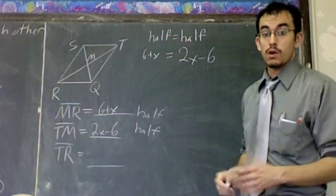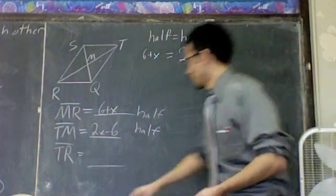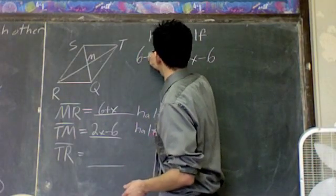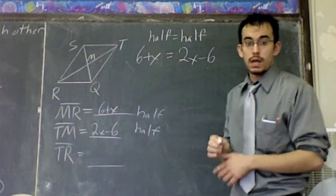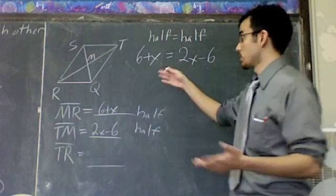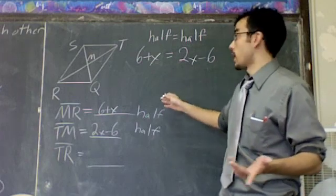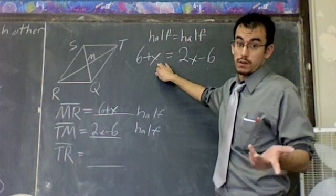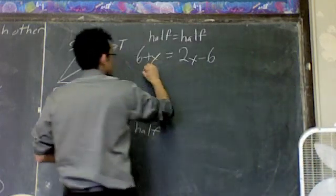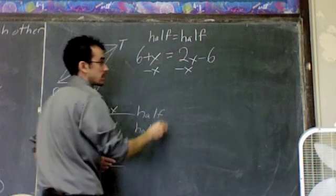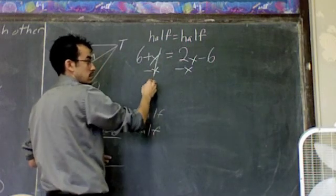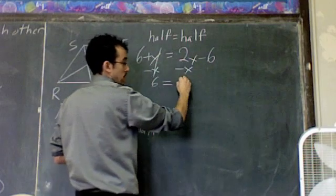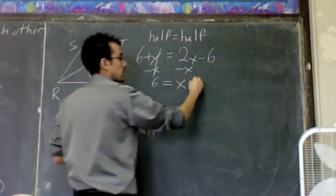We're going to solve this equation. We want X. We want X's alone. While I've got X on both sides, I couldn't combine any like terms. So get rid of the smaller X. This is 1X. This is 2X. I'm going to get rid of this one. Since it's positive 1X, you have to subtract 1X. Subtract X from the left, subtract X from the right. These will cancel. Bring everything down. 6 equals 2X minus 1X is 1X or just X minus 6.